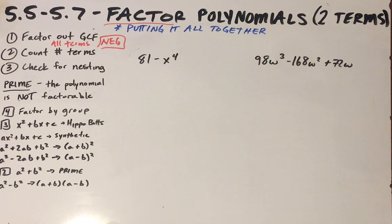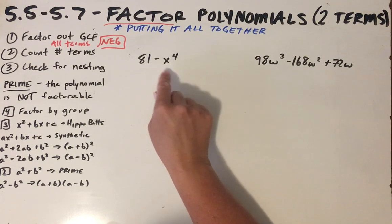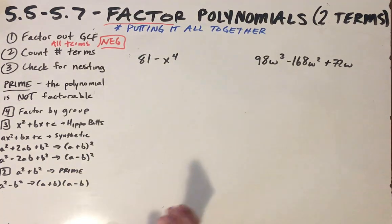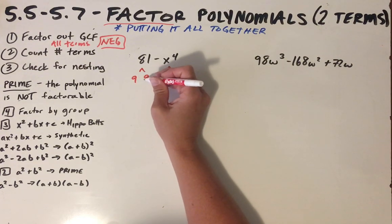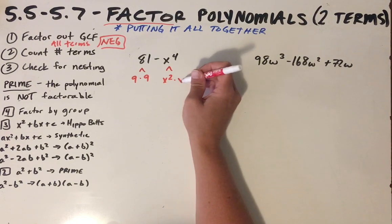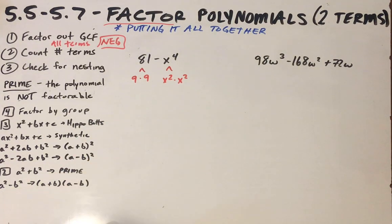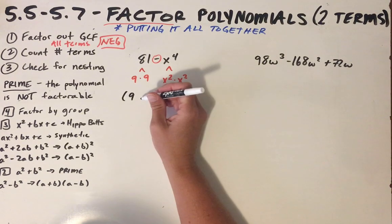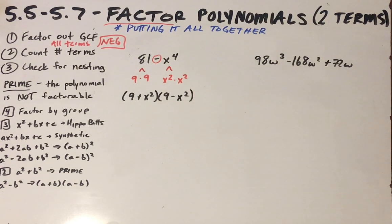Next problem: checking for a GCF — 81 is only a constant, the other term has no constant, so there's no GCF. Counting terms: two. Is this a sum or difference of squares? Both terms must be perfect squares. 9 times 9 is 81, and x² times x² is x⁴ — both are perfect squares. And the sign between them is a minus, so this is a difference of squares. It factors as (9 + x²)(9 − x²).